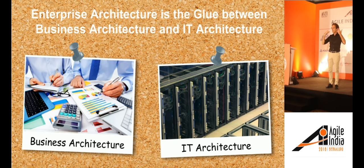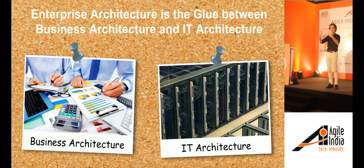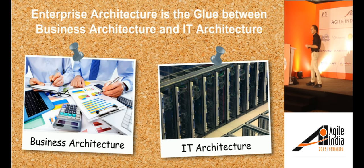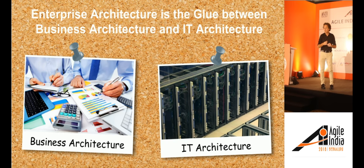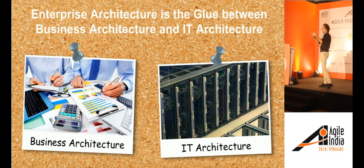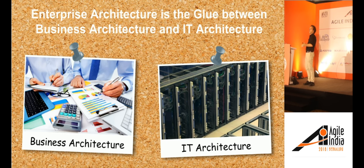You wonder where are the people who actually architect the business, because what that looks like really drives what the IT looks like to a large extent. There is a movement called business architecture that formalizes this similarly to IT architecture. But largely the business architects will be business leaders — chief operating officers, vice presidents, department heads. They usually don't have the title architect, but if you see what they do, designing business units, divisions, and product plans, they very much behave like architects. They are the architects of the business.